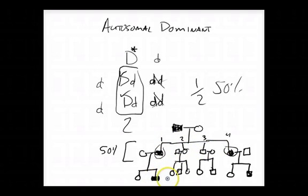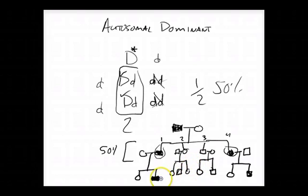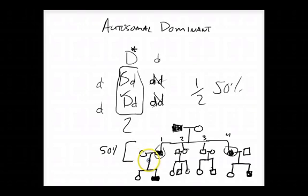In general, with a pedigree of an autosomal dominant disease, it's going to be fairly equally distributed — 50% to all the children. That's how you recognize the autosomal dominant pedigree. It's fairly straightforward; there are no underlying tricks to it, it's very easy to recognize.